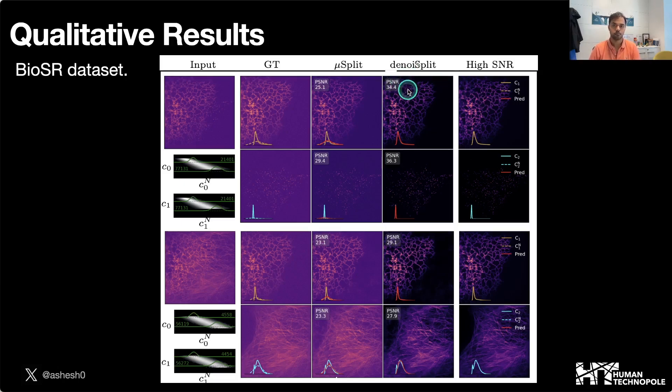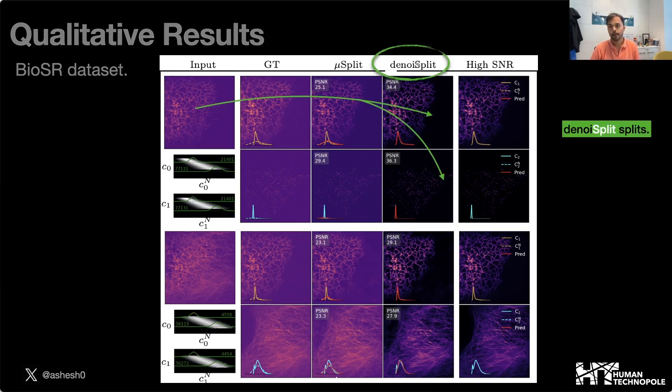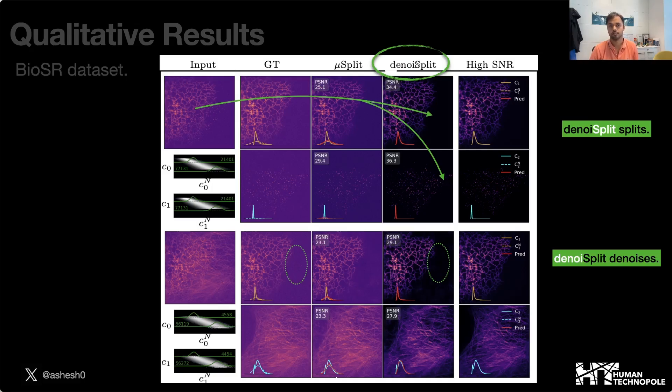We also have PSNR numbers computed between the prediction and the respective high SNR ground truth. As you can see, DenoiseSplit is not only able to split the structures, it is also able to remove the noise present in the input.